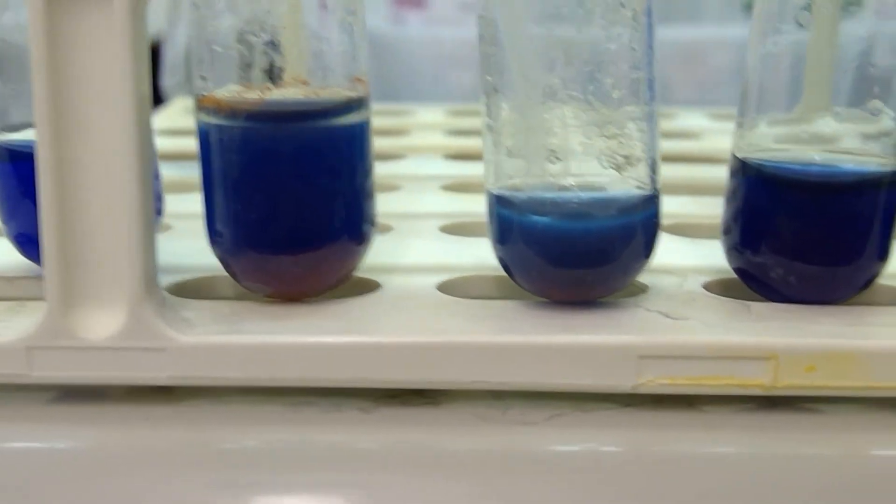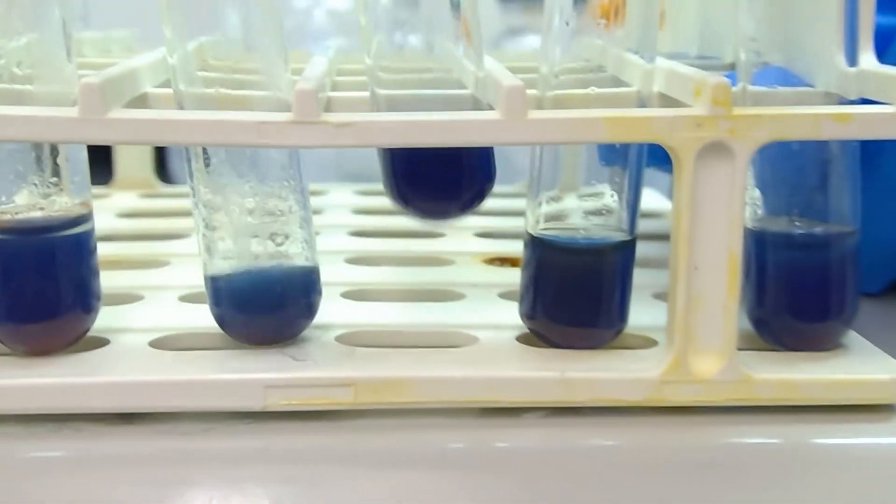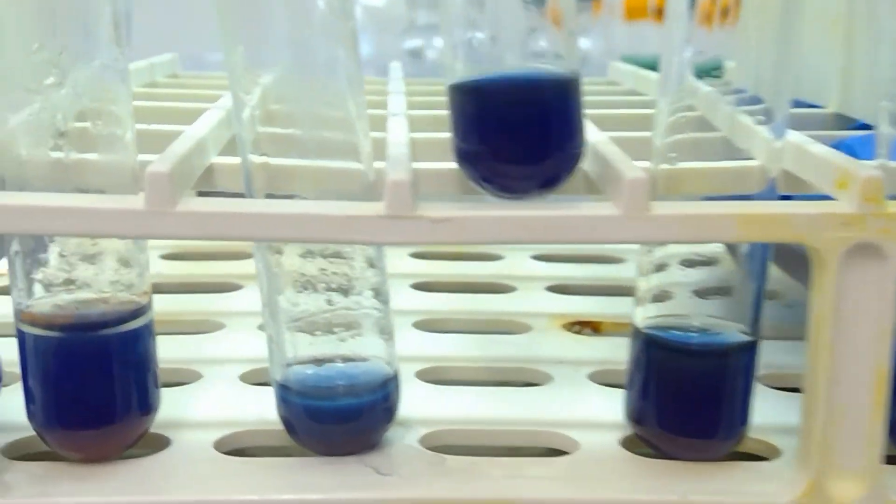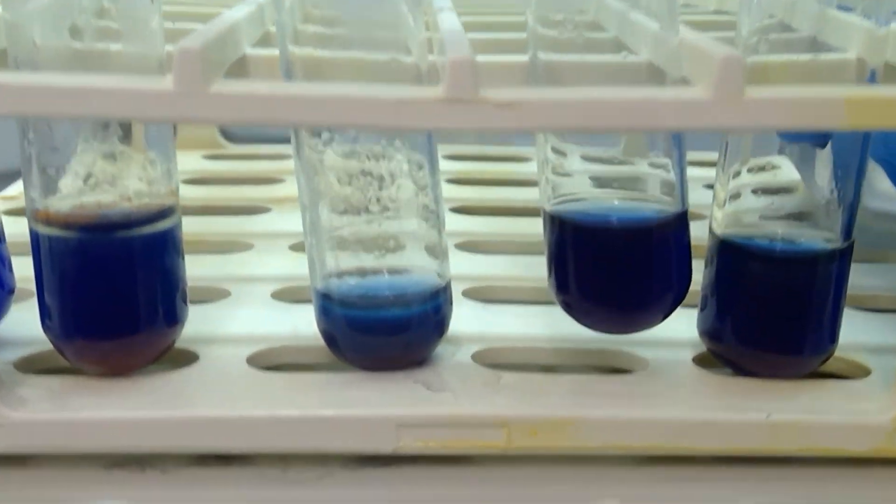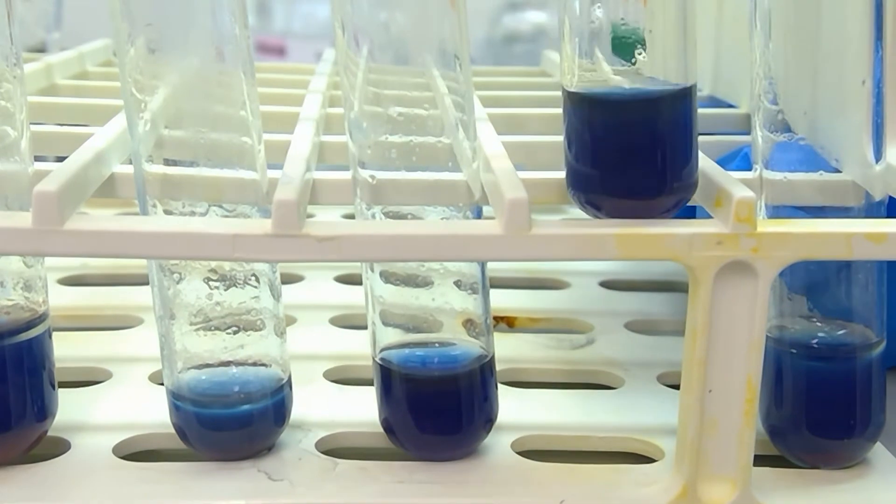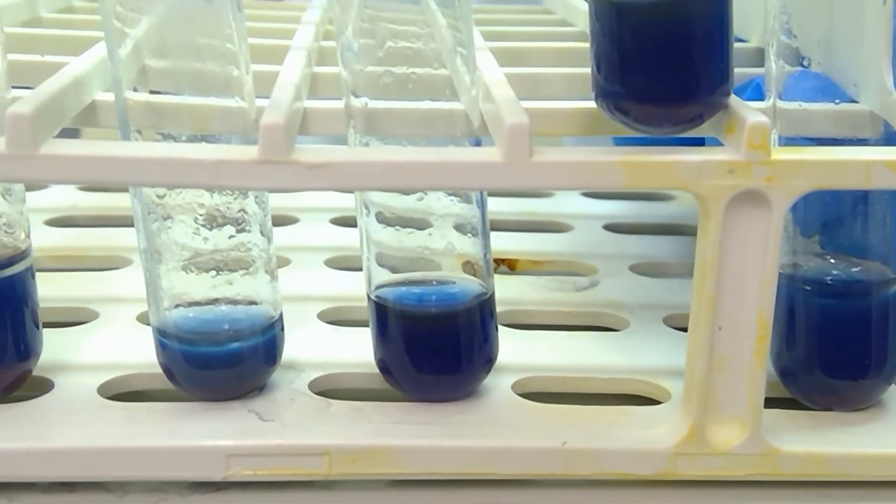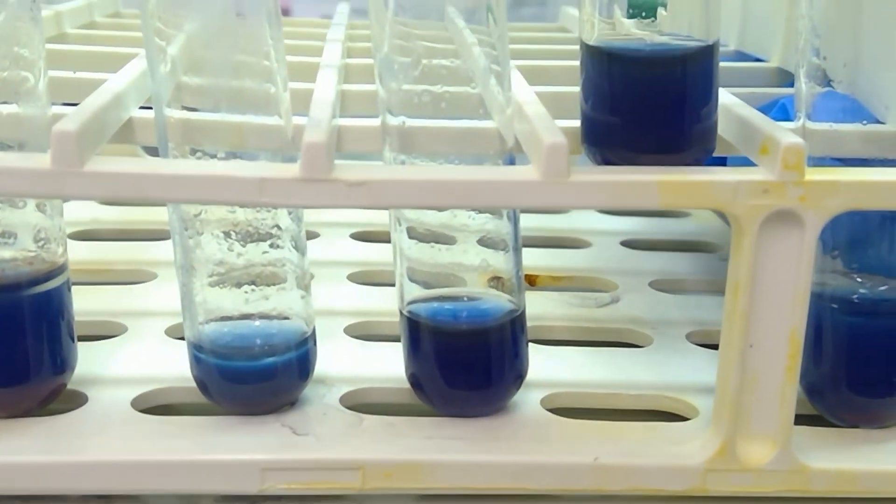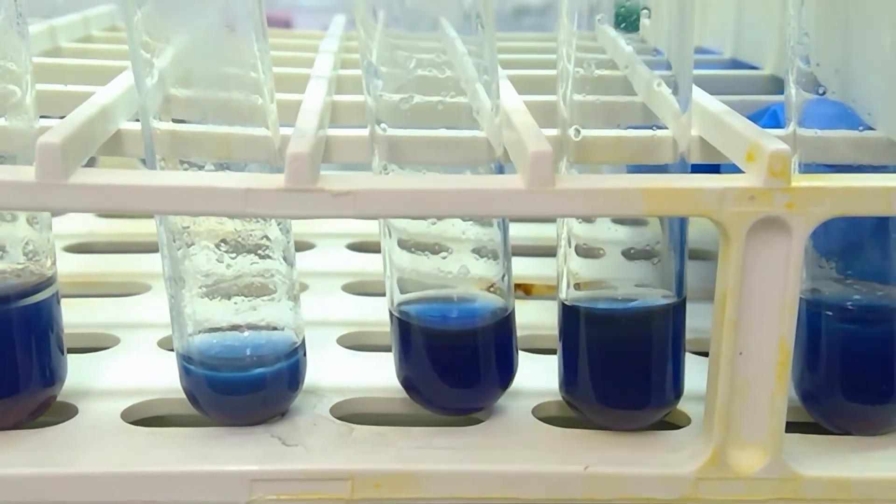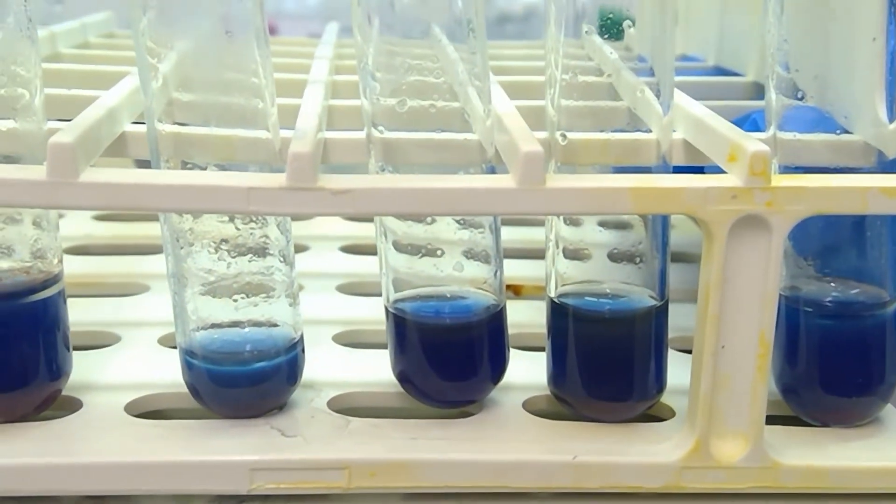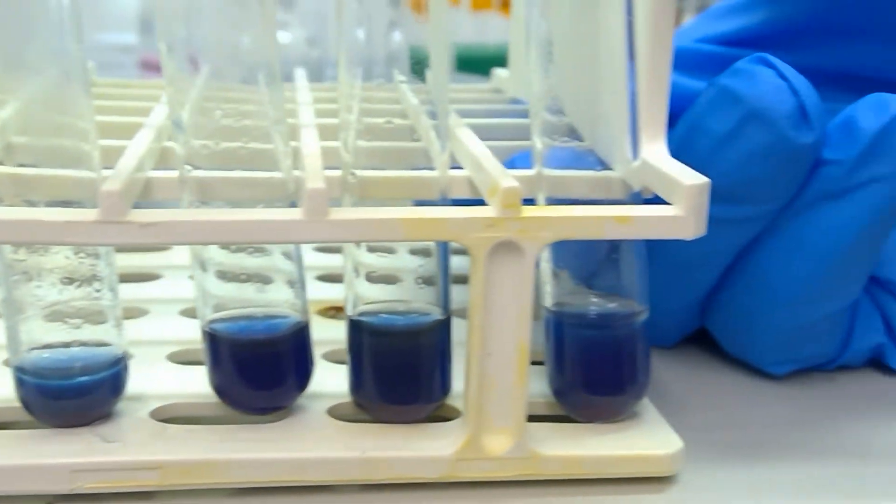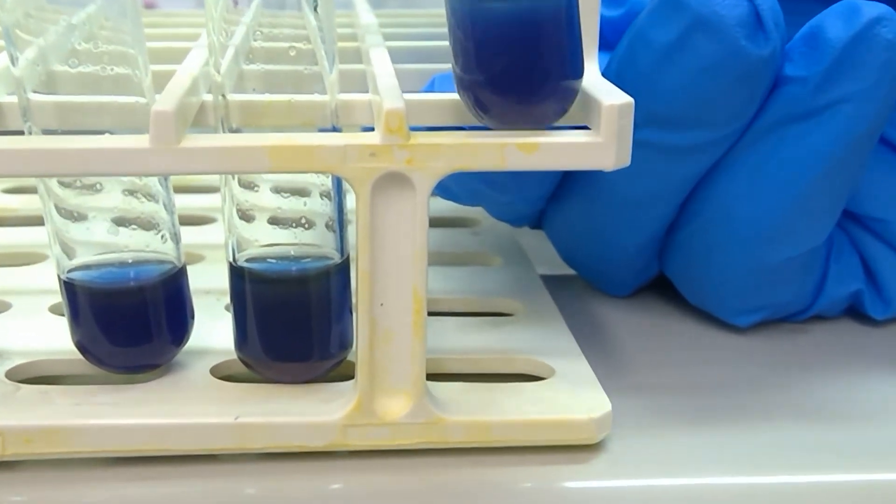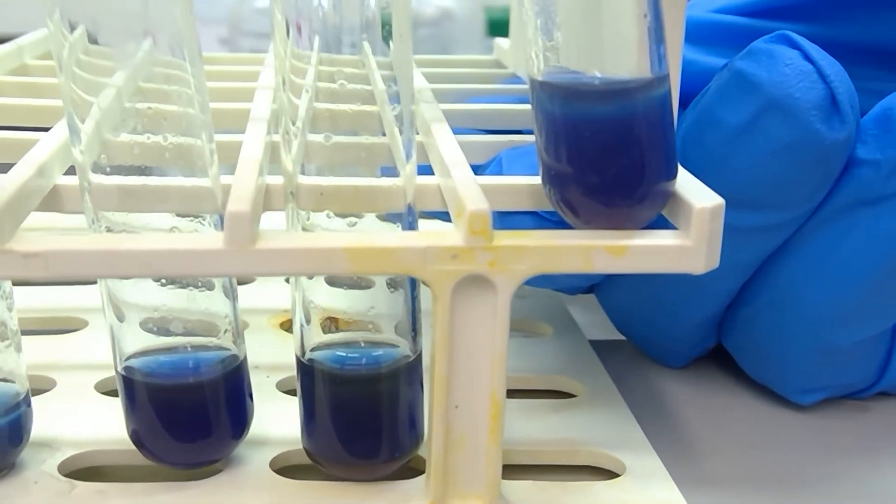Our next sample is 3-pentanone, which is a ketone, and again we got a darker color but no red precipitate that is noticeable. Next up we have 2-propanol. 2-propanol is a secondary alcohol and we didn't expect anything to occur for this particular sample, although it did get a little bit darker in the reaction.